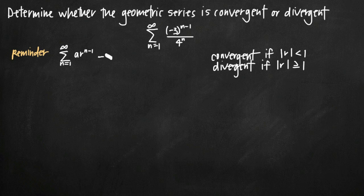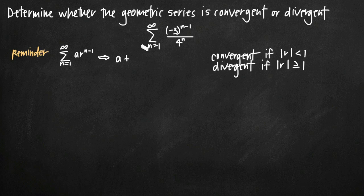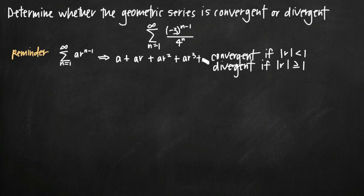When we plug in n equals 1, we get a times r to the 1 minus 1 power. 1 minus 1 is 0, and r to the 0 power is 1, so we get just a. When we plug in n equals 2, 2 minus 1 gives us 1, so we get a times r, or a·r. When we plug in n equals 3, we get a·r squared. And if we kept going we'd get a·r cubed, a·r to the fourth, and so on.